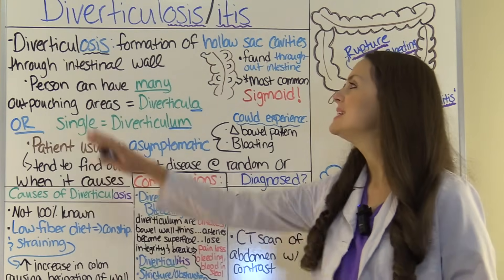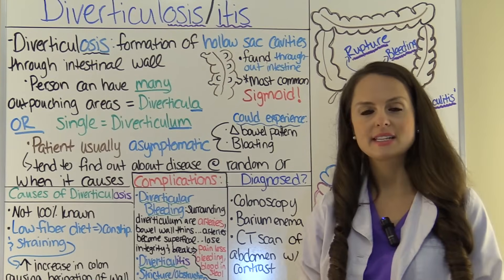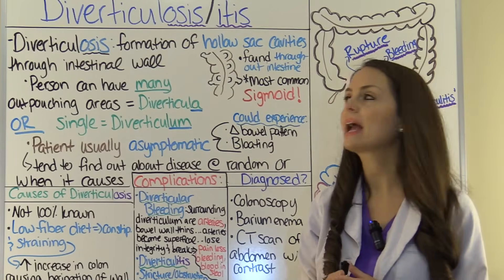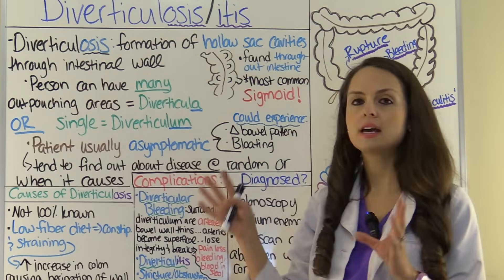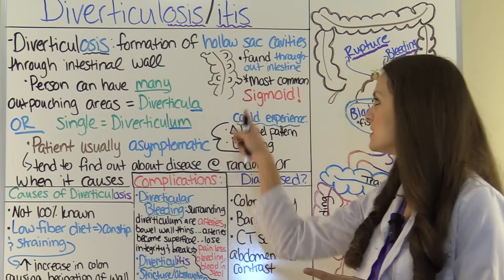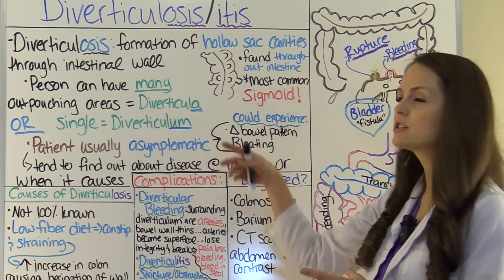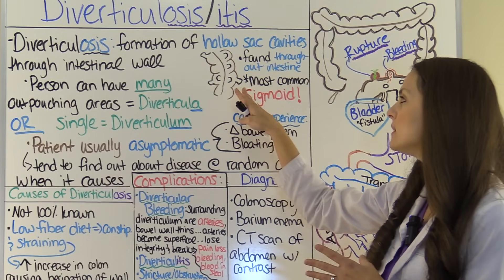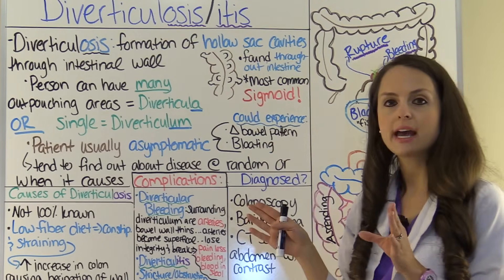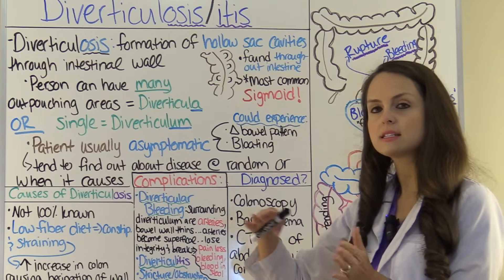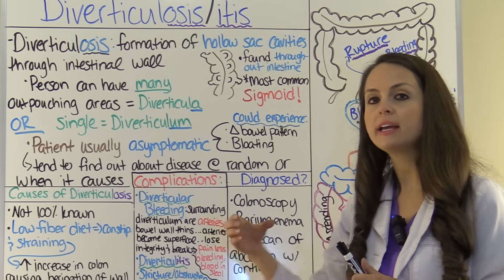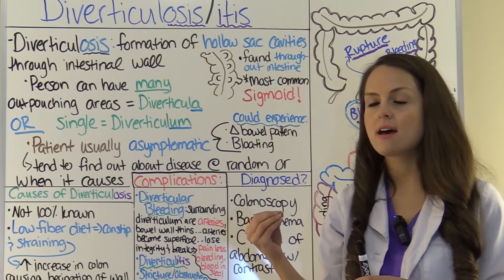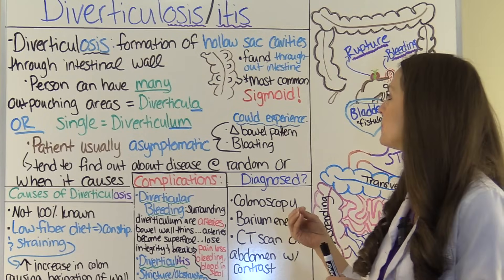Let's start out talking about diverticulosis. Diverticulosis is the formation of hollow sac cavities throughout the intestinal wall. As you can see through this illustration, this is just part of the large intestine. The bowel wall's three layers have started to lose their integrity, and instead of being nice and uniform, they've started to herniate out and create these pouch areas, which can turn into complications we'll talk about a little bit later.